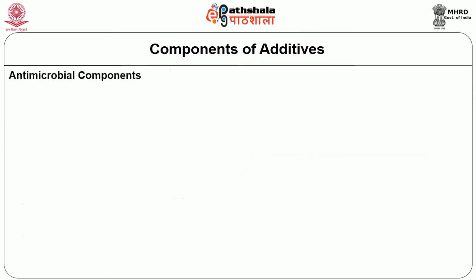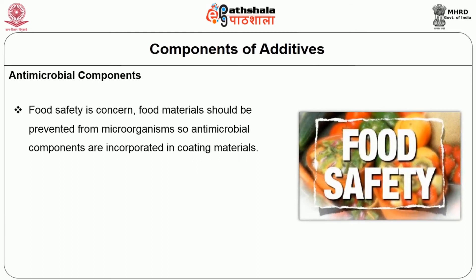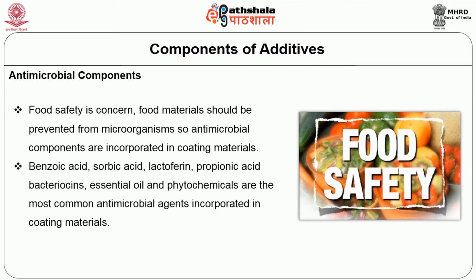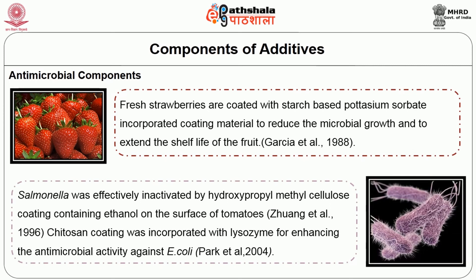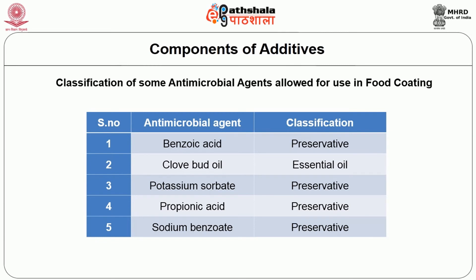The next component is antimicrobial components. Food safety is a major concern, and food materials should be protected from microorganisms in coating materials. Benzoic acid, sorbic acid, lactoferrin, propionic acid, bacteriocins, essential oils, and phytochemicals are the most common antimicrobial agents incorporated in coating materials. Fresh strawberries are coated with starch-based potassium sorbate incorporated in coating materials to reduce microbial growth and extend shelf life. Salmonella was effectively inactivated by hydroxypropylmethylcellulose coating containing ethanol on the surface of tomatoes. Chitosan coating was incorporated with lysozyme to enhance antimicrobial activity against E. coli. Classification of antimicrobial agents allowed for use in food coating includes benzoic acid, clove oil, and potassium sorbate.